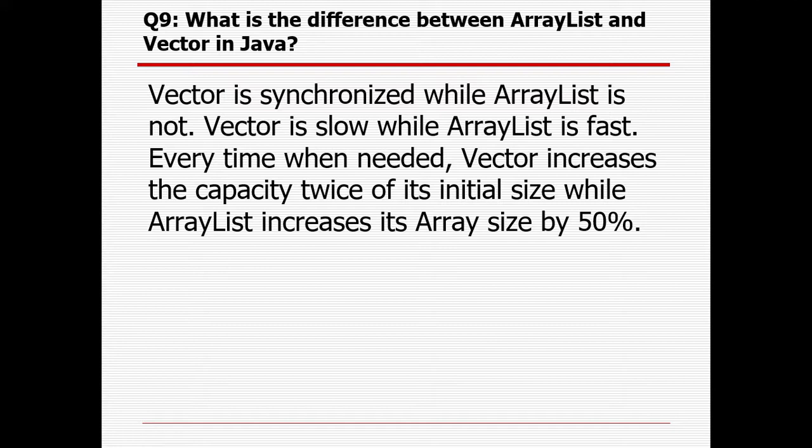What is the difference between ArrayList and Vector? Vector is synchronized whereas ArrayList is not synchronized. Vector is slow in operation but ArrayList is fast. Every time when needed, Vector increases its capacity by twice the initial size, whereas ArrayList increases only by 50%.